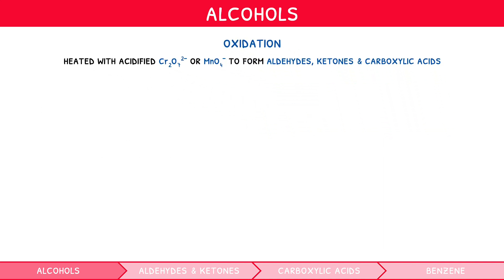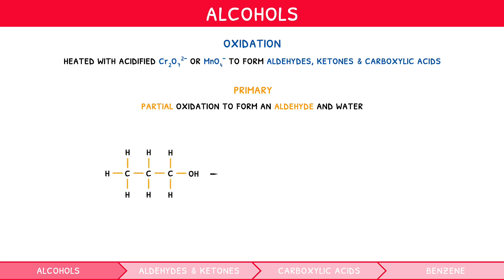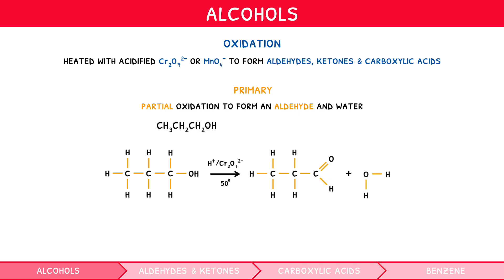During oxidation, the oxidising agent required and species formed depends on the classification of the alcohol used. Primary alcohols undergo partial oxidation when heated with either oxidising agent to form an aldehyde plus water. For example, the displayed equation for the partial oxidation of propan-1-ol to form propanal is shown. Using a chemical equation where O in brackets indicates the oxidising agent: CH3CH2CH2OH + [O] → CH3CH2CHO + H2O.